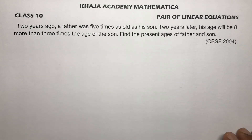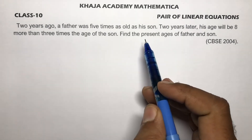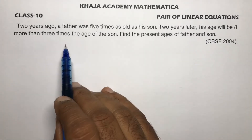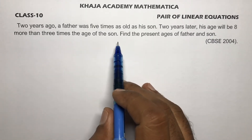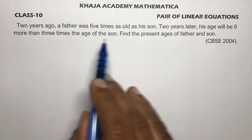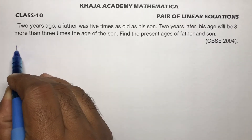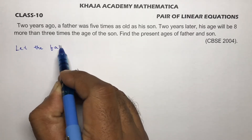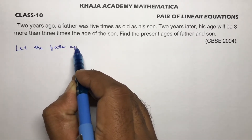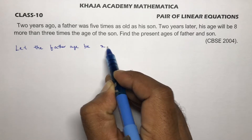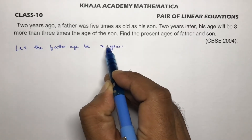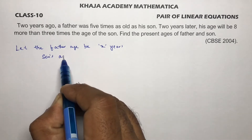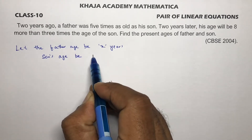Two years ago, a father was five times as old as his son. Two years later, his age will be eight more than three times the age of the son. Let the father's present age be x years and the son's present age be y years.